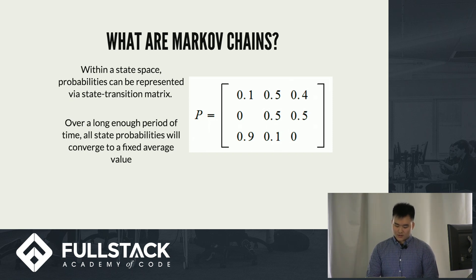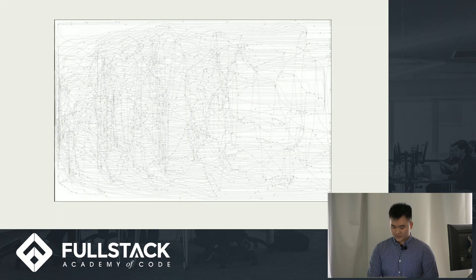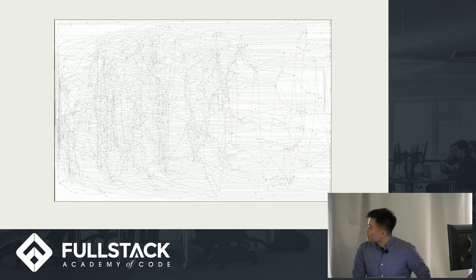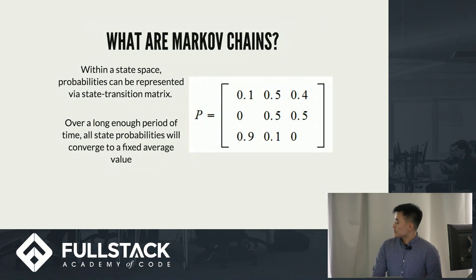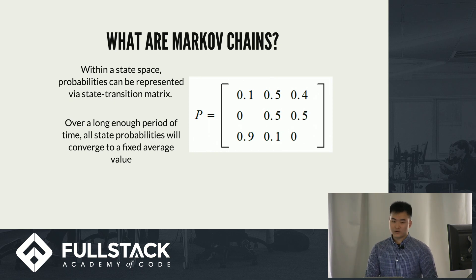One of the mathematical properties of a Markov chain states that eventually, if you go through a Markov chain enough times, every state probability converges to a fixed average value. With the transition matrix for a Markov chain, it takes up N-squared space complexity. And if you were to do an N-order Markov chain, it would exponentially grow relative to N.